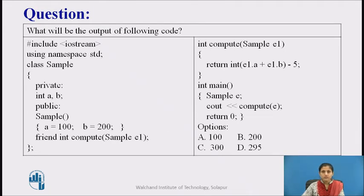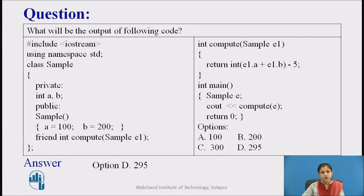Pause the video and find the output of the given code, then resume when done. The answer is option d: 295. When object e is constructed, the default constructor is called and initializes data members a and b with values 100 and 200 respectively. Compute is a friend function and object e is passed to it as a parameter. e.a is 100 and e.b is 200, so their addition is 300. 300 − 5 = 295, which is returned from the compute function and displayed. The output is 295.